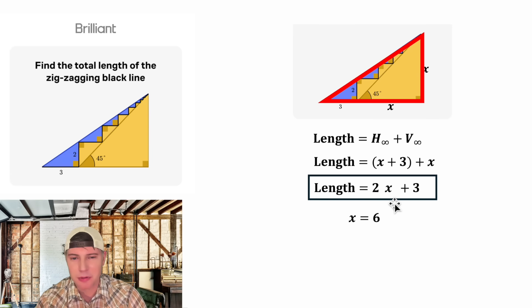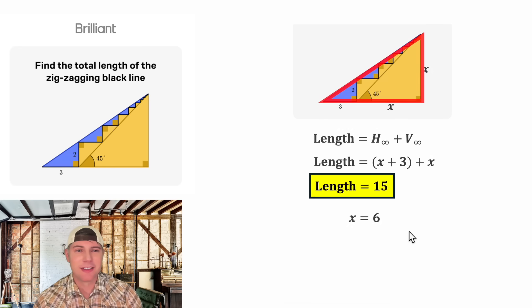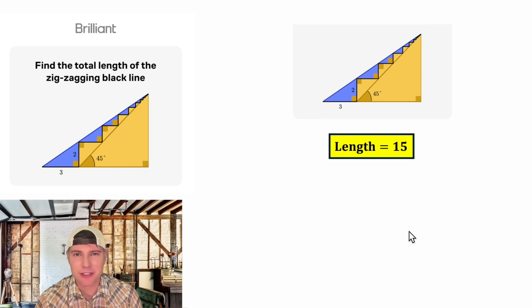Let's give ourselves a little bit more room and plug in six in for the x. Two times six is 12 and 12 plus three is 15. This is the answer to the question. Let's highlight it. So either my method or their method gave us a length of 15. How exciting.